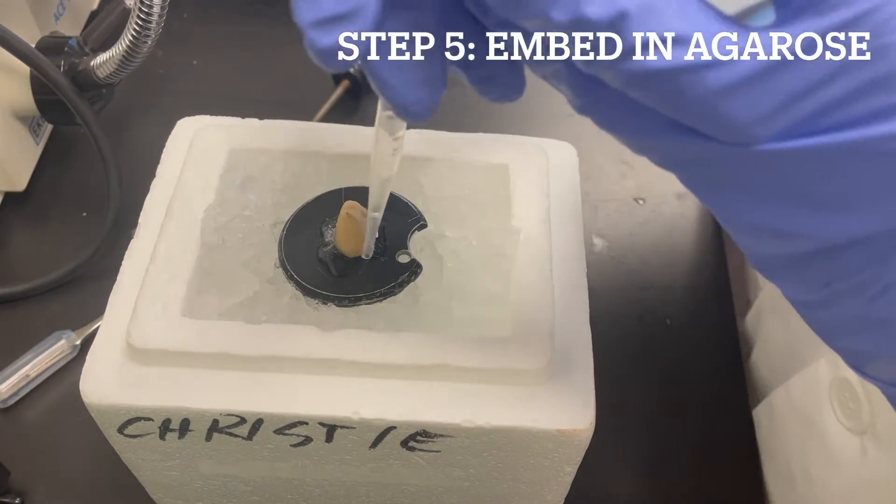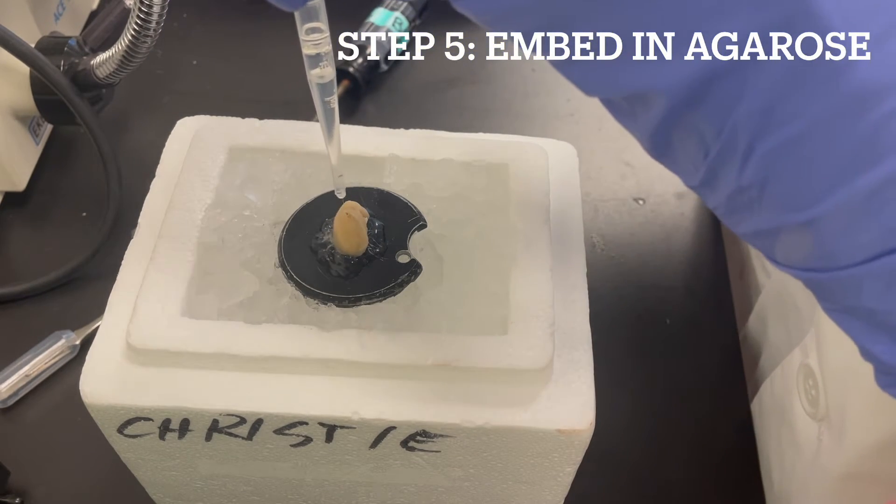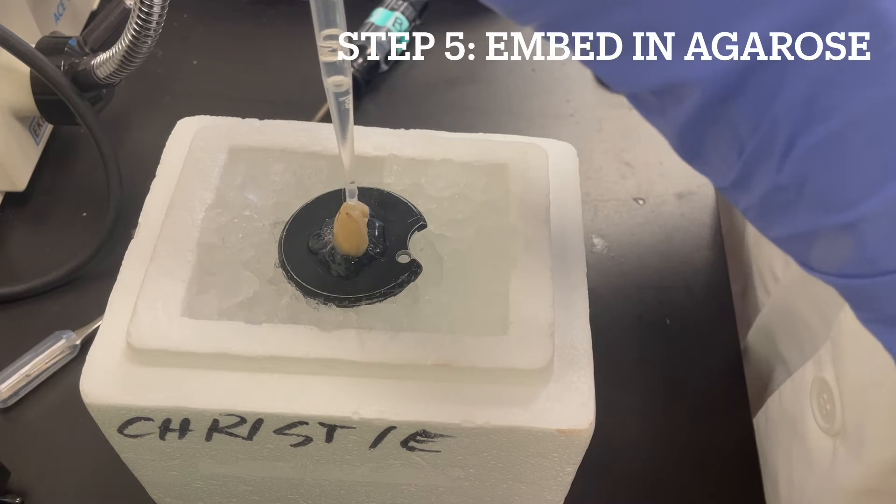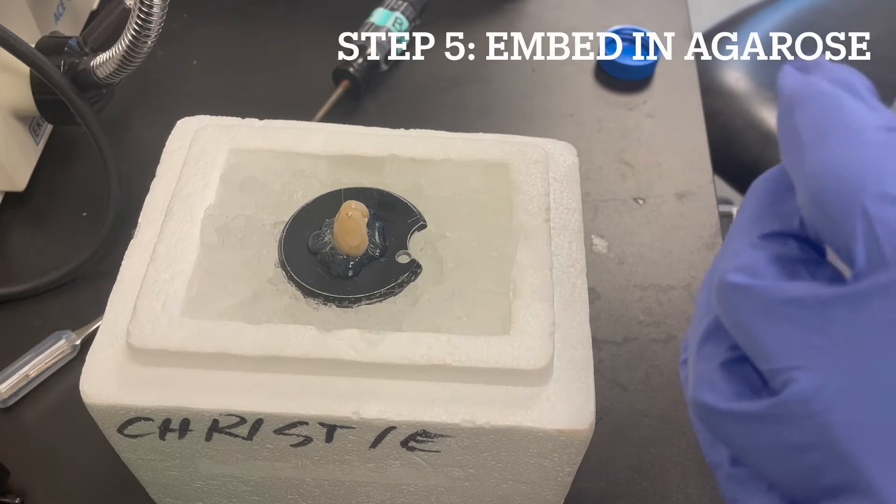Using the transfer pipette method, we first surround the brain in agarose, allow that to solidify, and then drip the agarose on top of the brain, letting gravity bring the agarose down to cover the entire tissue.